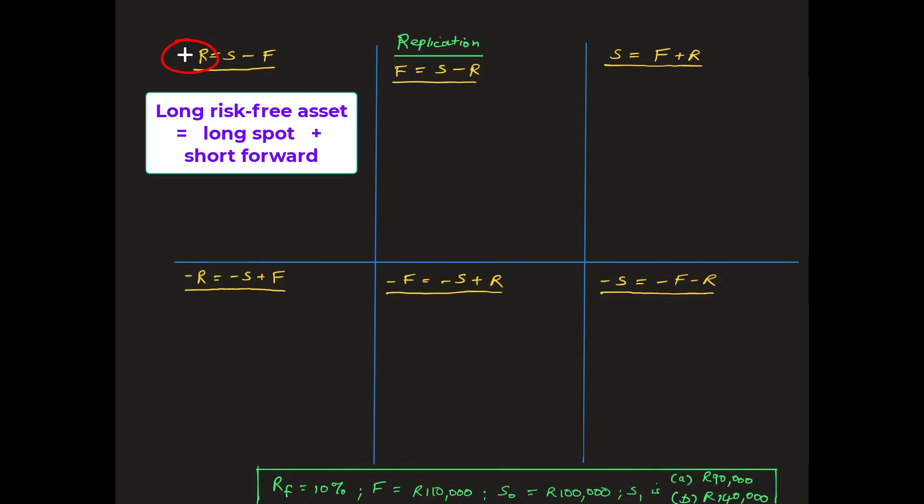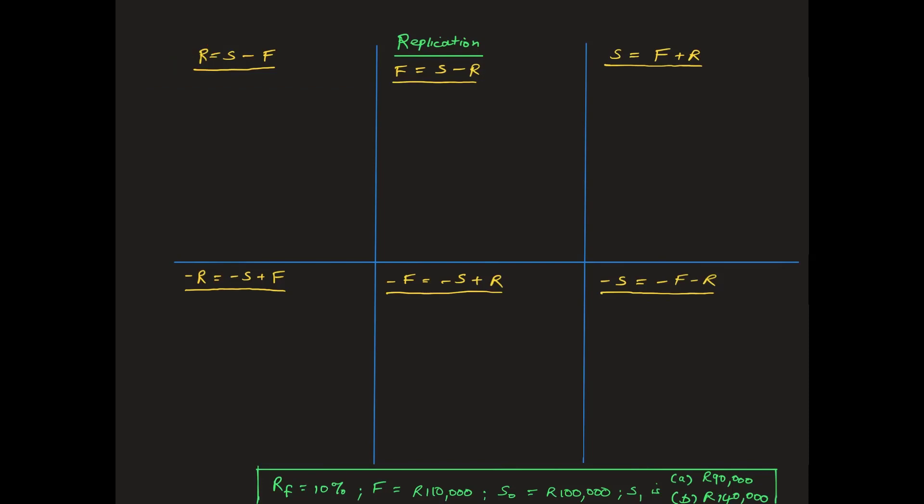We are also obviously aware that a plus means a long position and a minus means a short position. For case A, where the spot price of gold is R90,000, the long gold position loses R10,000 because the gold was originally bought at R100,000. The short forward gains R20,000.